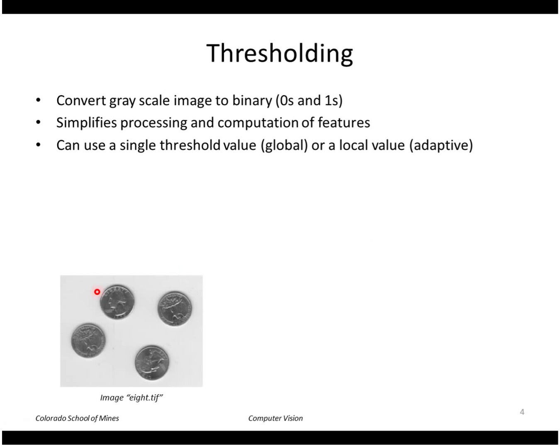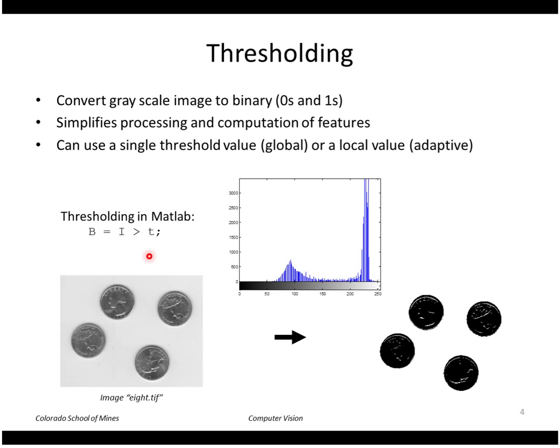There's an example of an image, 8.tiff, that has a light colored background and dark regions where we have these coins. If I look at the histogram of this image, I see two major peaks. The large one here corresponds to the background, and the smaller darker one here corresponds to these coin regions. So I could threshold the image by choosing a value somewhere in between here, for example like 160 or something.